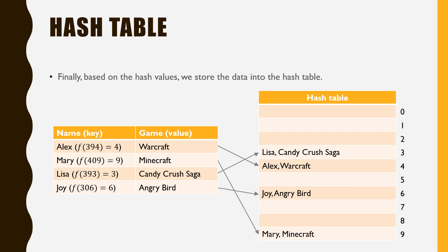For example, the name Mary corresponds to a hash value of 9, and the record is stored in the ninth position of the hash table. Note that the entire record, including both the keys and the values, are stored.